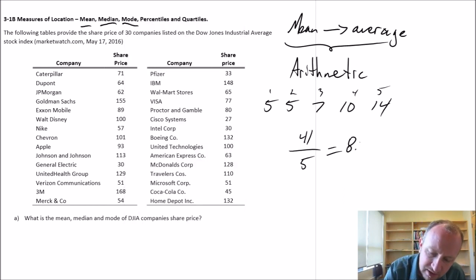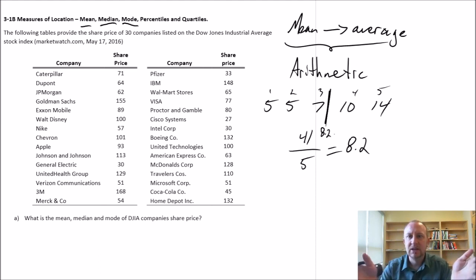So this value of 8.2 is one measure of what we call central tendency or central location. It's a measure of roughly the middle—in this case, 8.2 is somewhere around the middle of that data set. One of the characteristics about this arithmetic mean is that it is influenced by the value of those numbers.